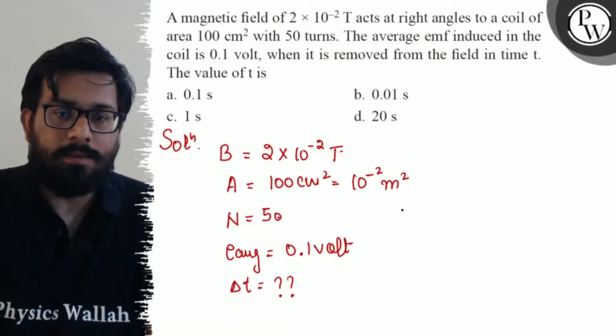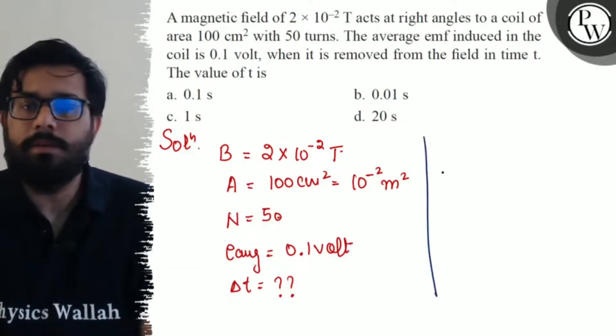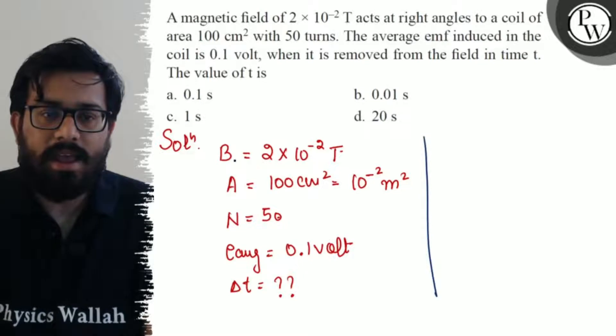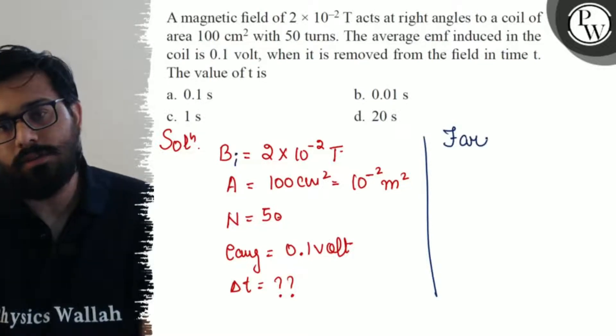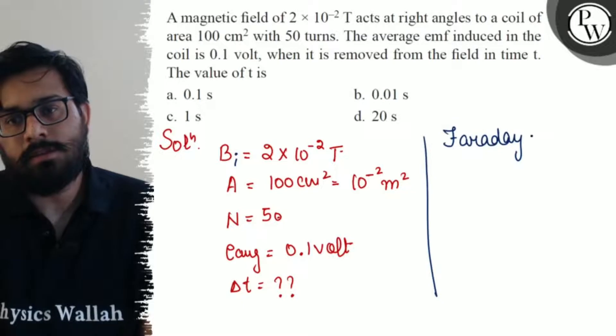Now we have to calculate the value of time interval when it's removed from the field. When it is removed from the field, the final magnetic field becomes zero. From Faraday's law, you can use the concept: